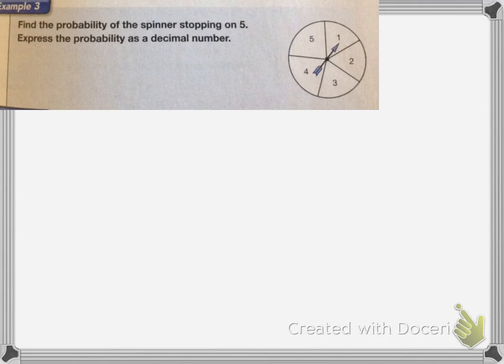When we're converting fractions to decimals, it's a little bit different. It wants to find the probability of the spinner stopping on 5, and then express it as a decimal number. Since all of the sections are the same, the probability of landing on 5 will be 1 out of 5, 1 fifth.